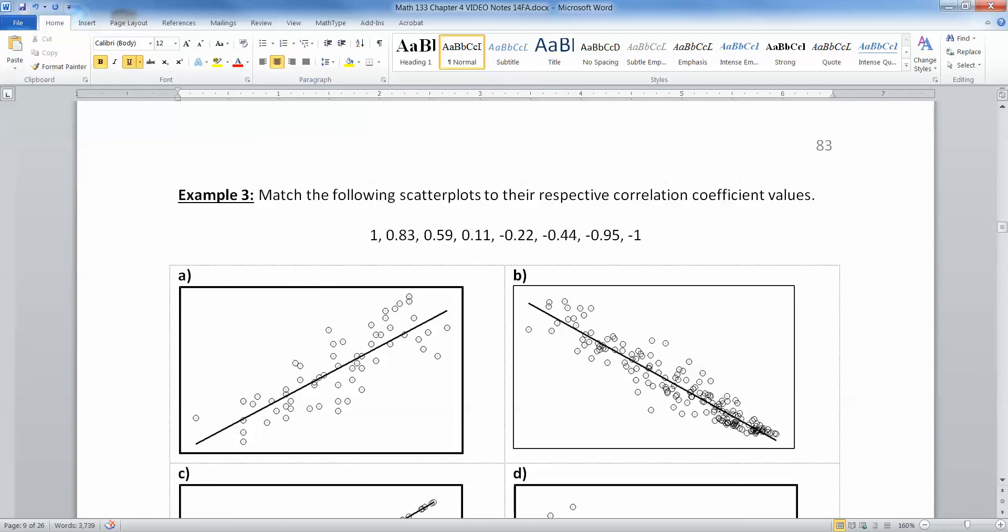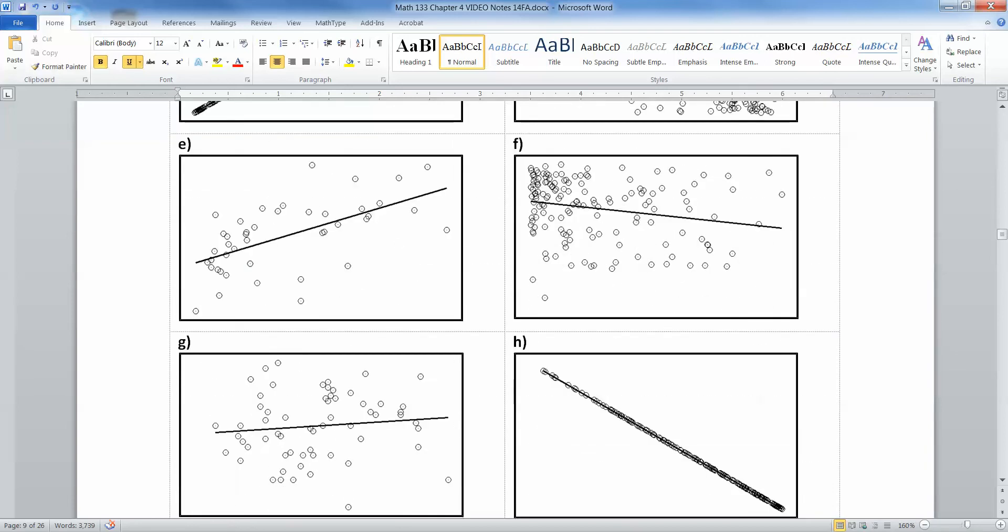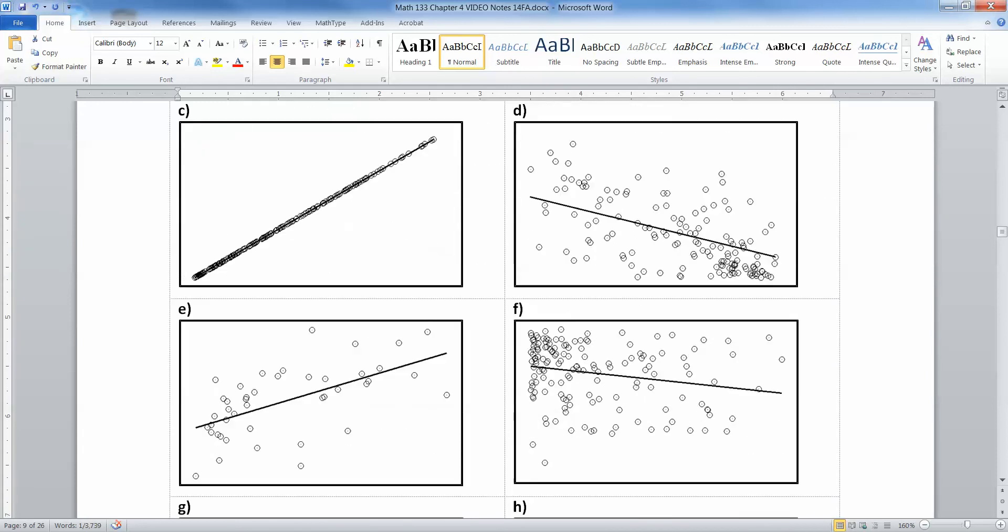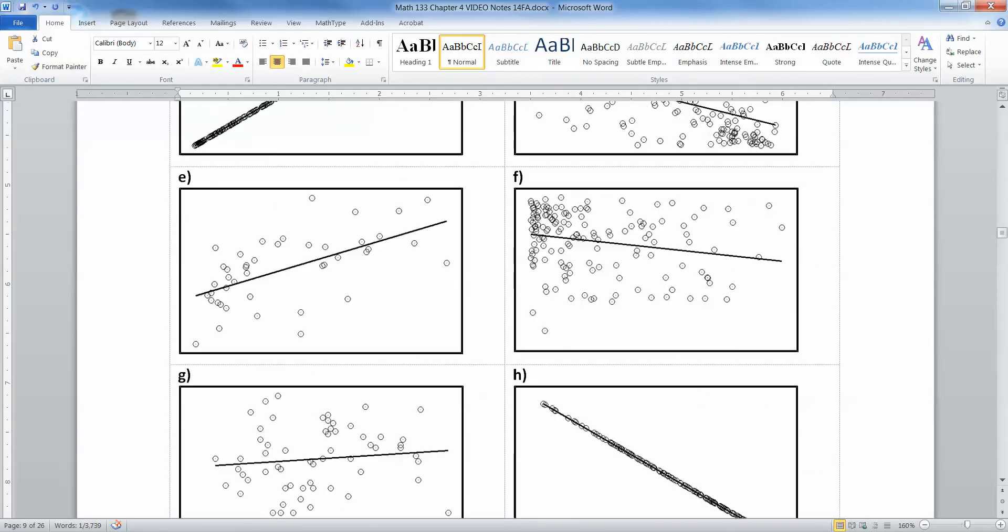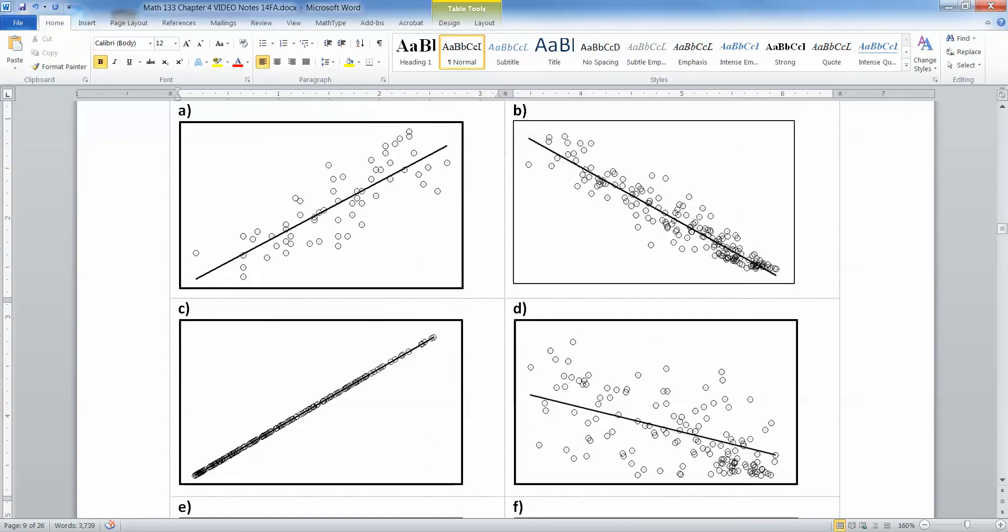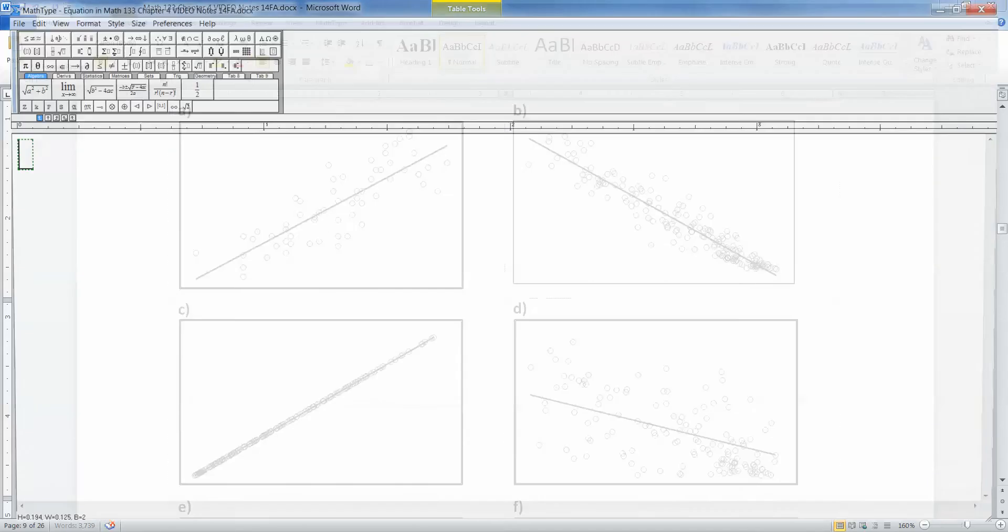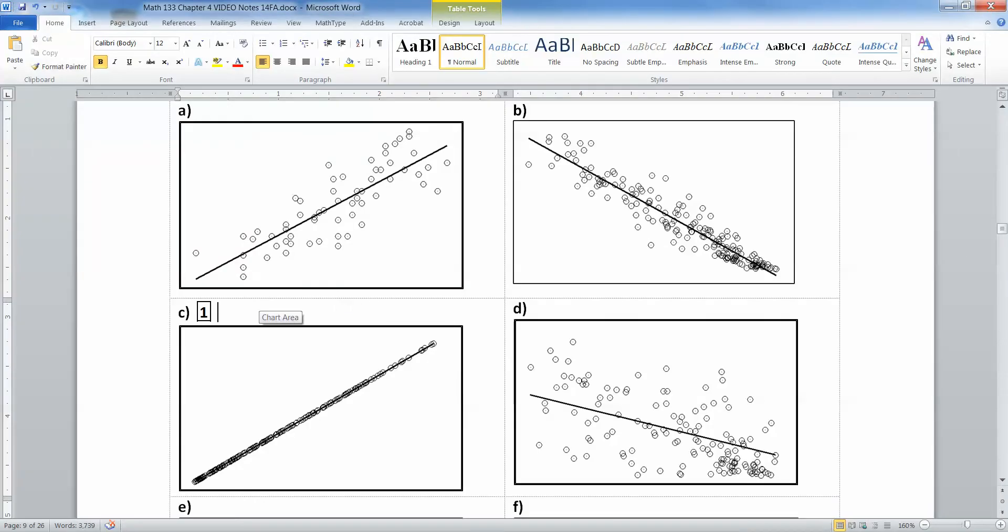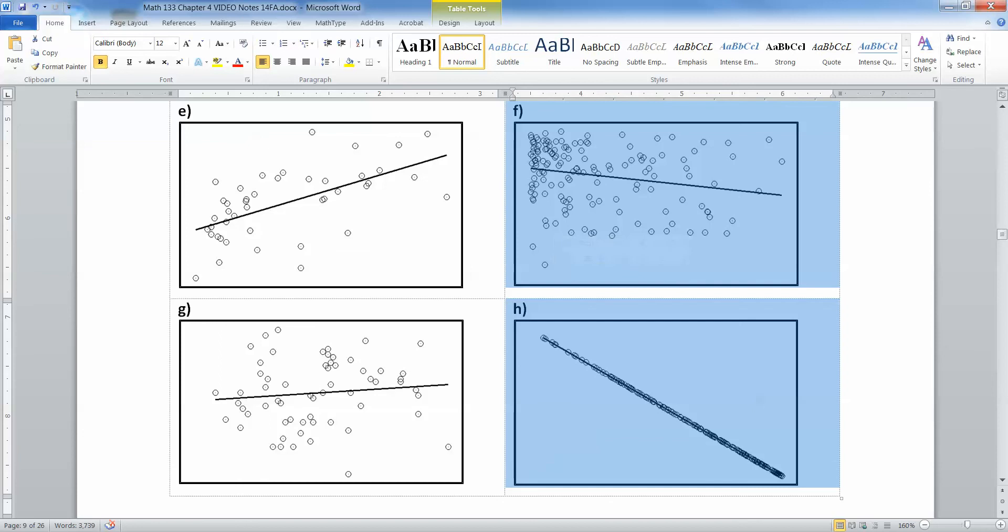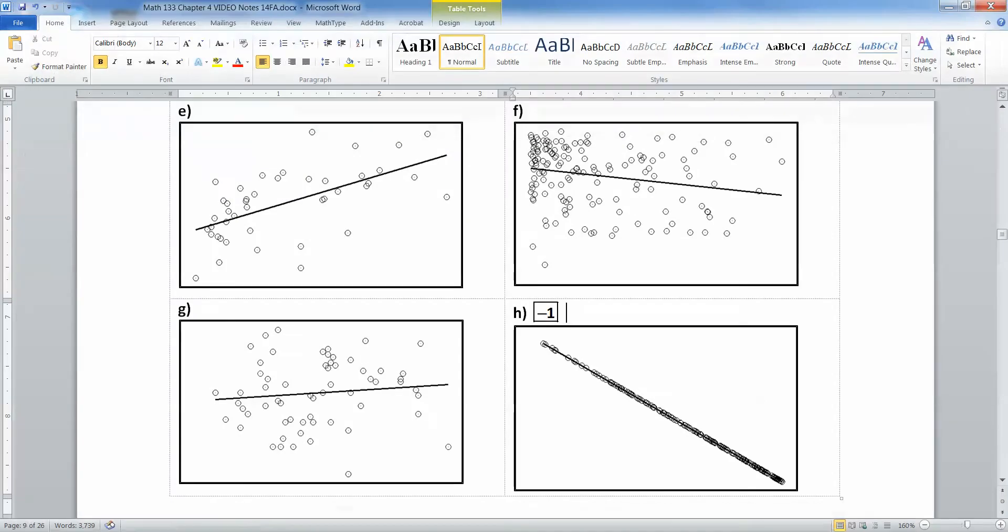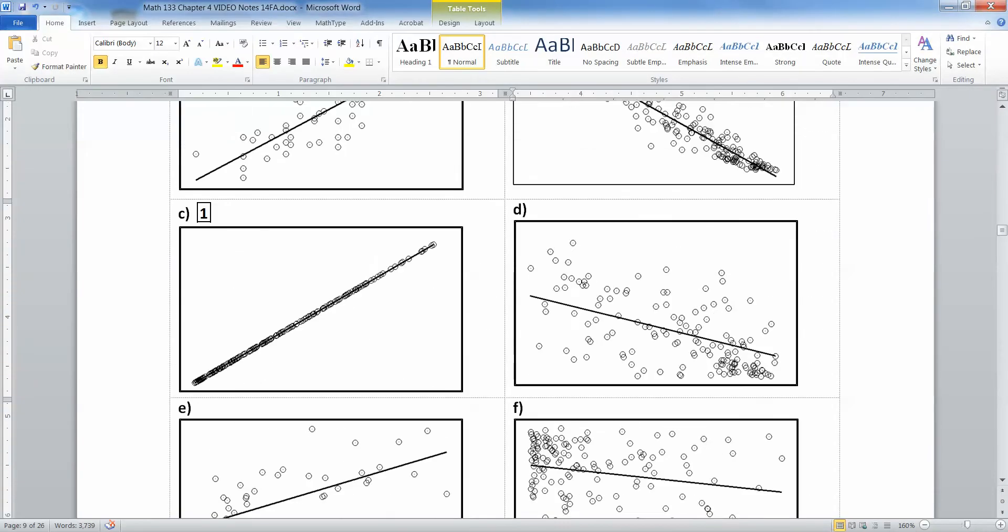Now we have to take that newfound knowledge and try to match the scatter plots we have here with the correlation coefficients up at the top. One of these is positive 1 as its correlation coefficient, one is positive 0.83, one is positive 0.59 and so on. So take a look at them. Two of them should be very obvious right from the start for everybody, hopefully. The 1 and negative 1, yes? So this one is a positive 1. I'll put a little box around it. That one has a correlation coefficient of 1. And down here, we have a correlation coefficient of negative 1. There's the end of the easy ones.